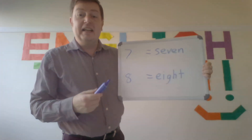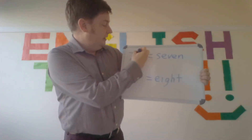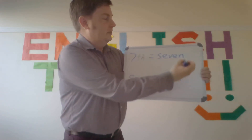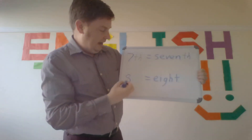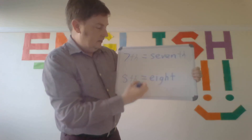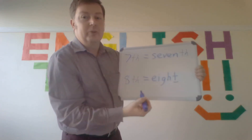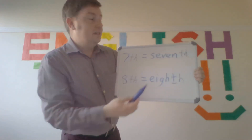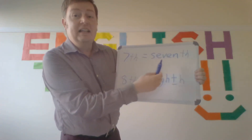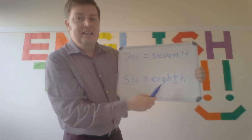And for seventh and eighth, you'd also add 'th.' So 'seventh.' And 'eighth.' But with 'eight,' you already have a 't,' so you only add 'h.' Please repeat: seventh — seventh, eighth — eighth. Very good.